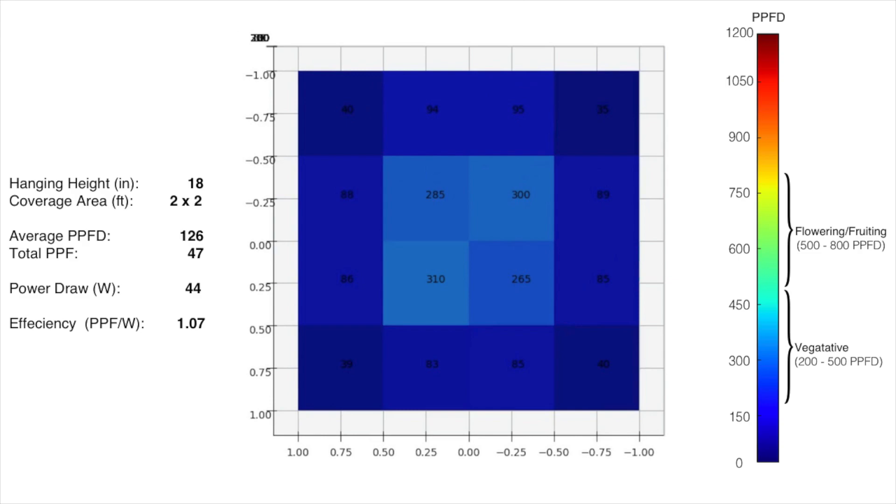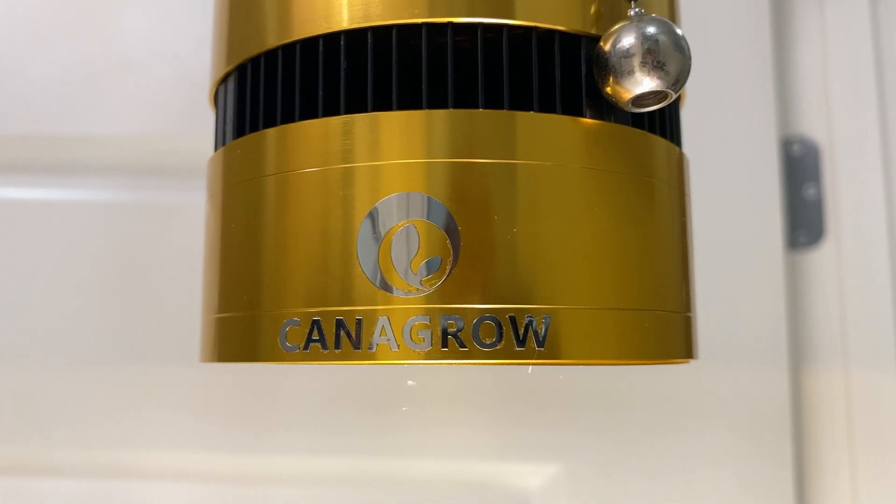You cannot even really do vegetative growth in a 2 foot by 2 foot grow area with this. You're going to have to drop the hanging height and maybe focus it on 1 foot by 1 foot and you definitely can't grow any kind of fruiting or flowering plants with a light of this power.